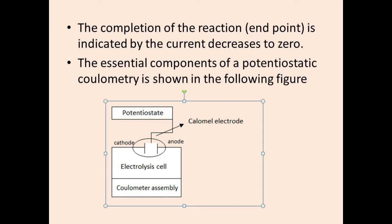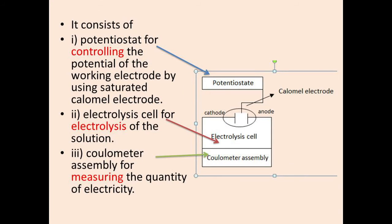When the reaction is complete, the current comes to zero. The essential components of potentiostatic coulometry are shown in the following figure. The setup contains three components, the first being the Potentiostat, indicated by the blue color arrow.